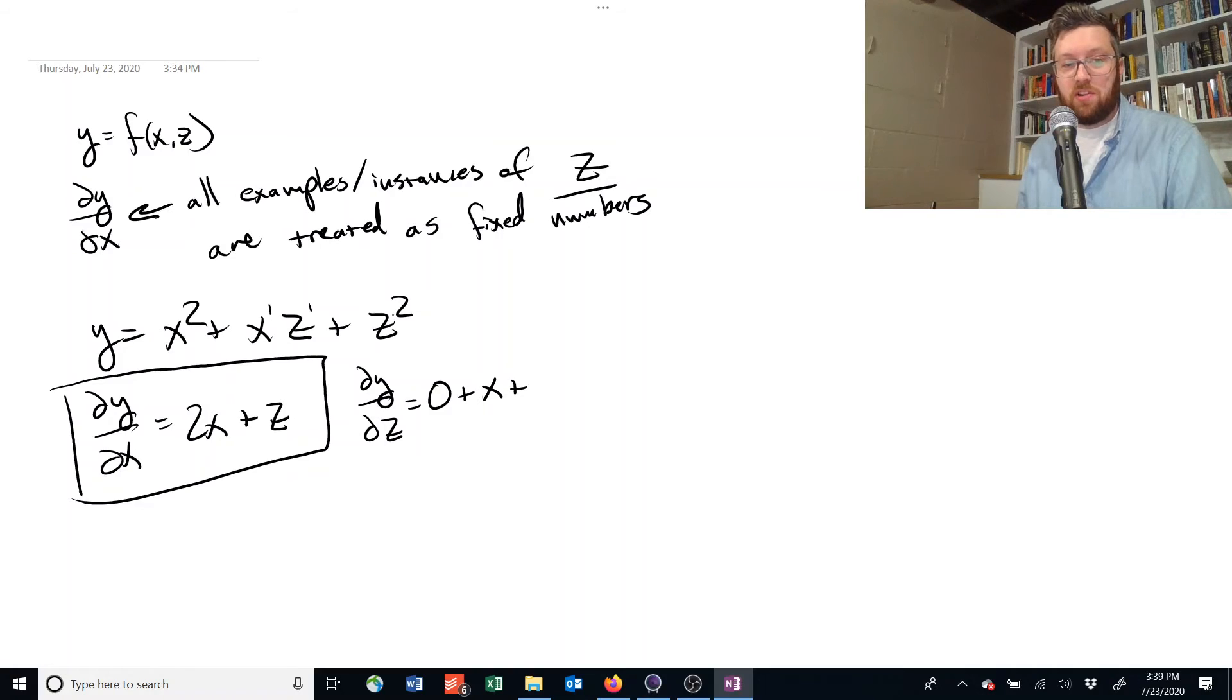And then the last term is now z raised to the power of 2. We bring that exponent down, multiply it by z, and we have 2 minus 1 up here, which is equal to 1, so we don't even need to write that.